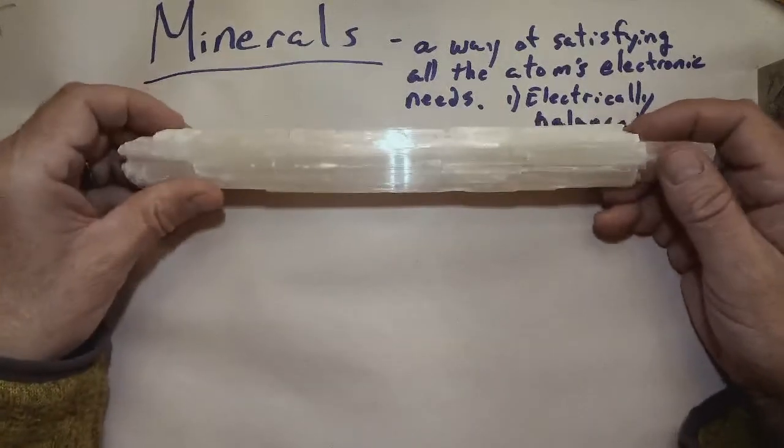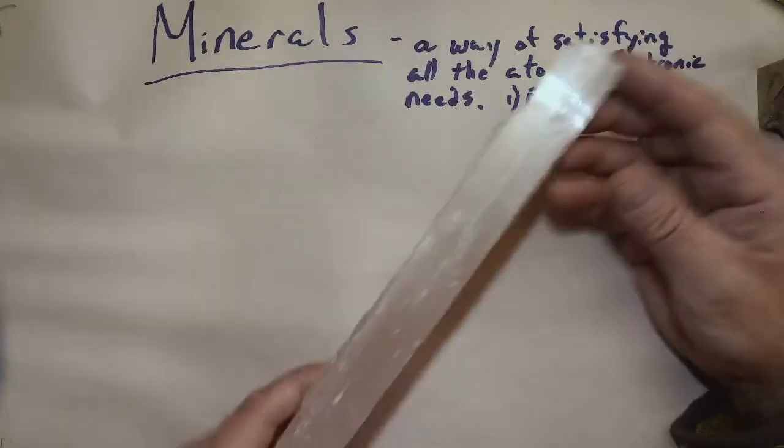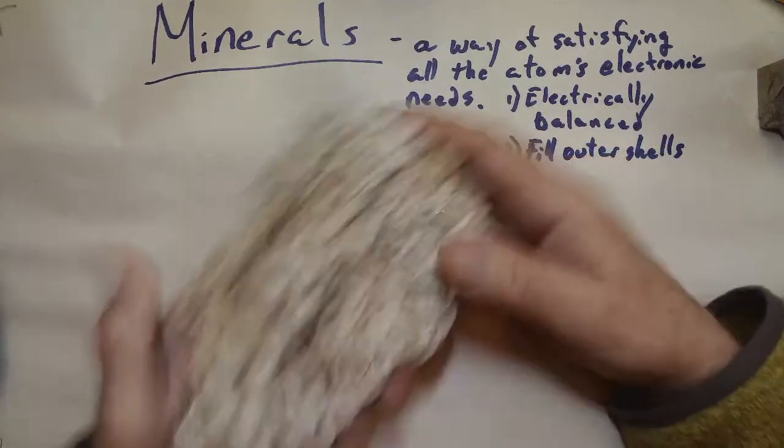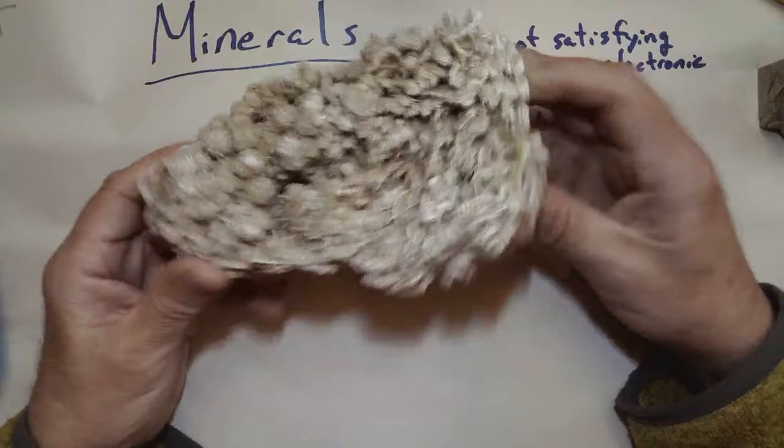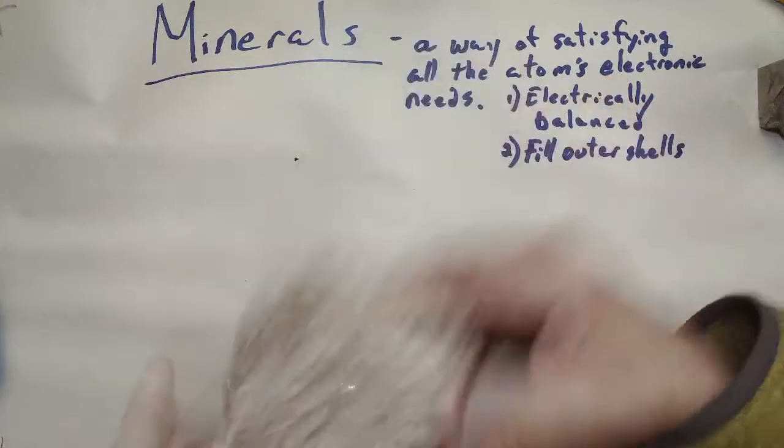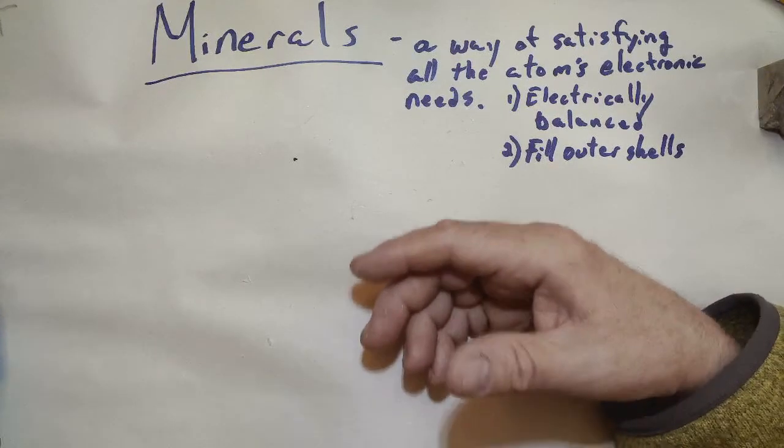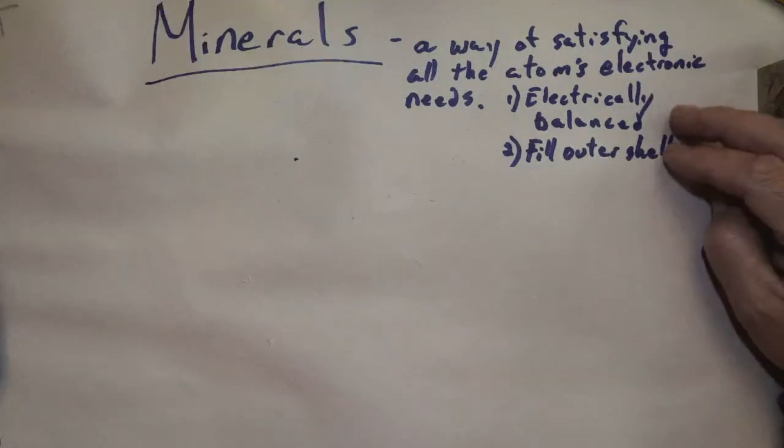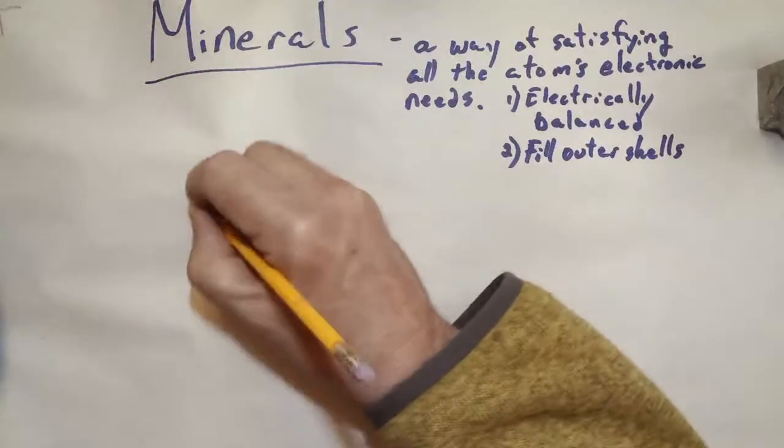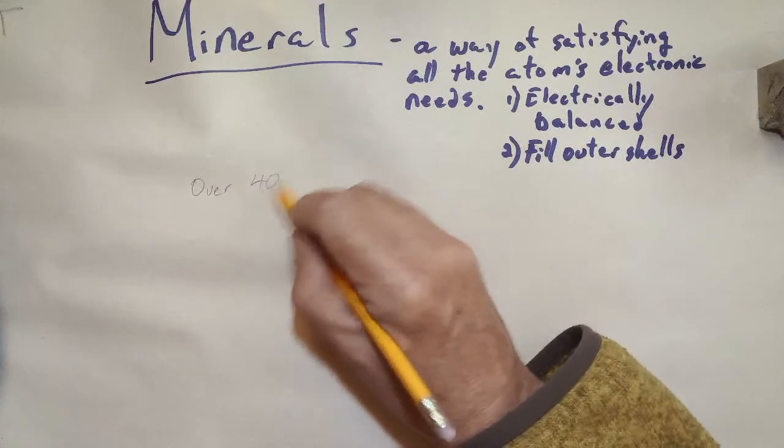This is a form of gypsum. Again, another beautiful crystal. And the other one I have here is called a desert rose. And this is also gypsum. How beautiful. Well, minerals will form all sorts of different arrangements. Again, it's just to satisfy these things.